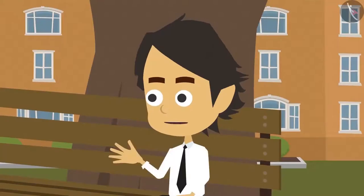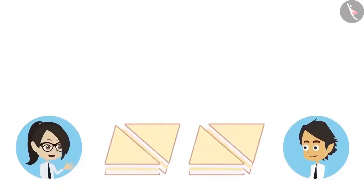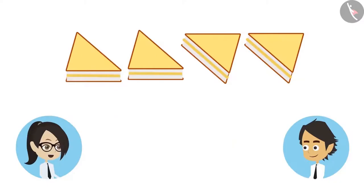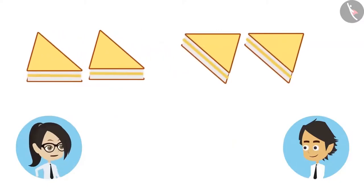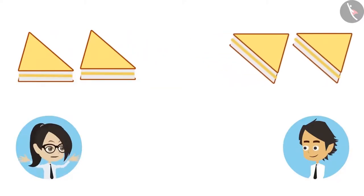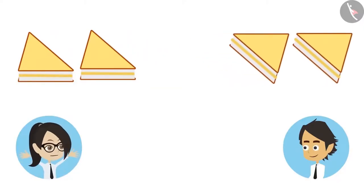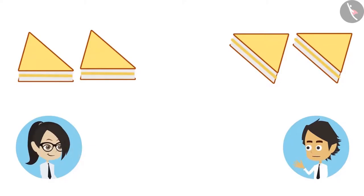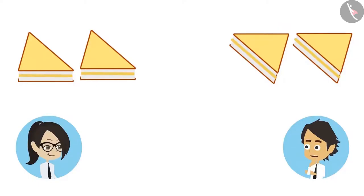Half means dividing anything into two equal parts. Like I have four sandwiches — if we divide four sandwiches into two equal parts, then one part will have two sandwiches. I will keep one part for myself and share the other part with you. Now I have two sandwiches and you too have two sandwiches. We could count the sandwiches and find the number of halves.